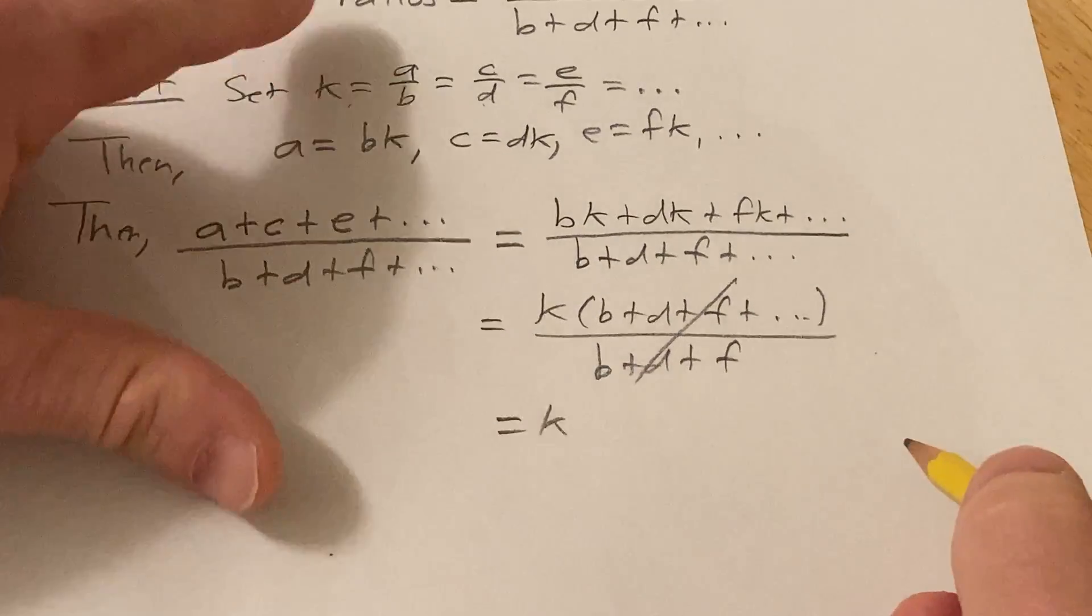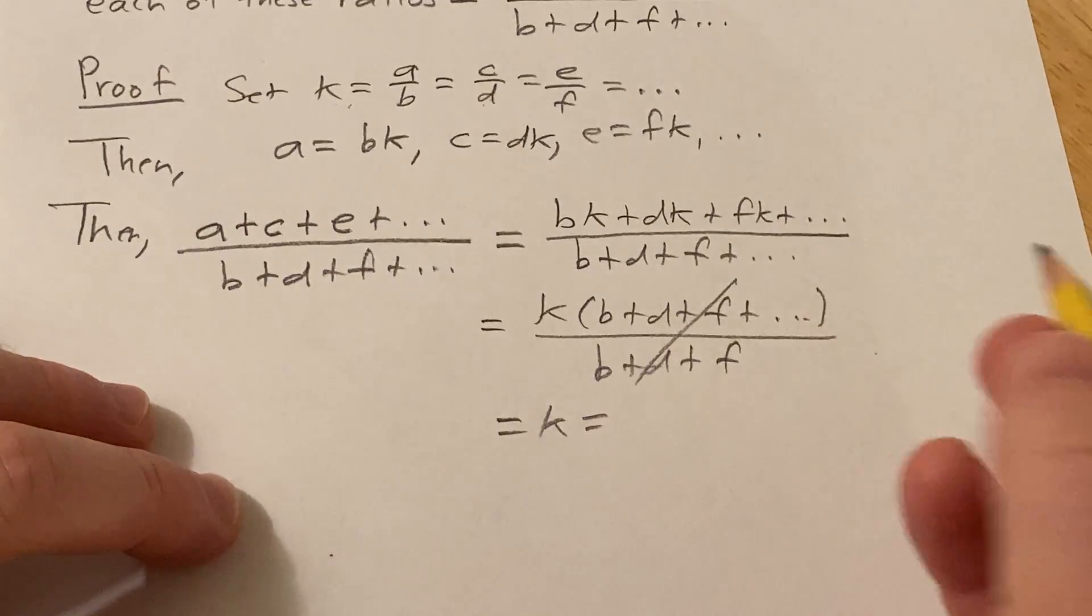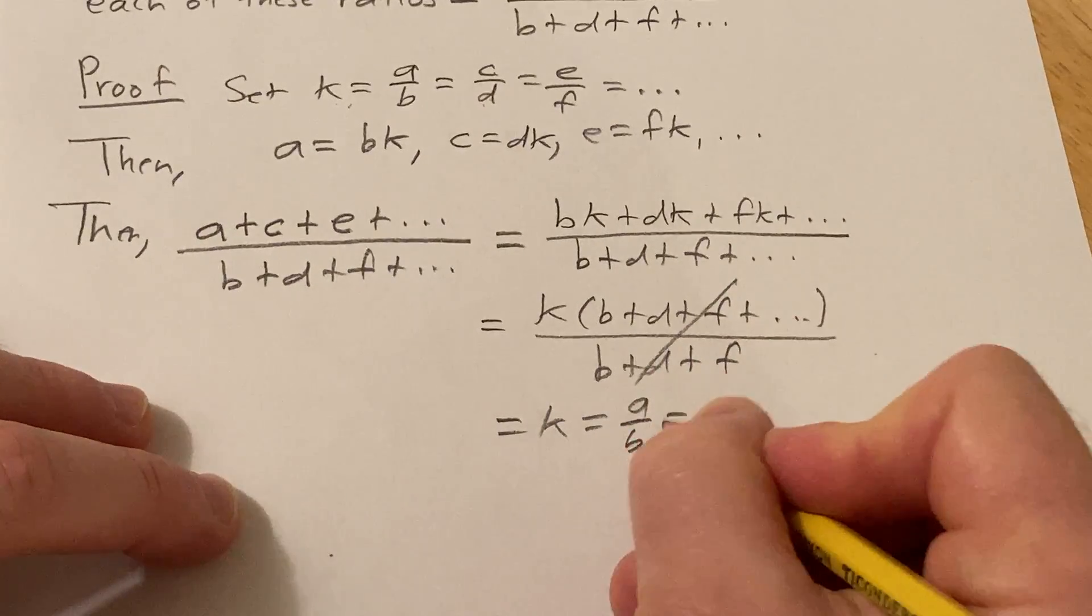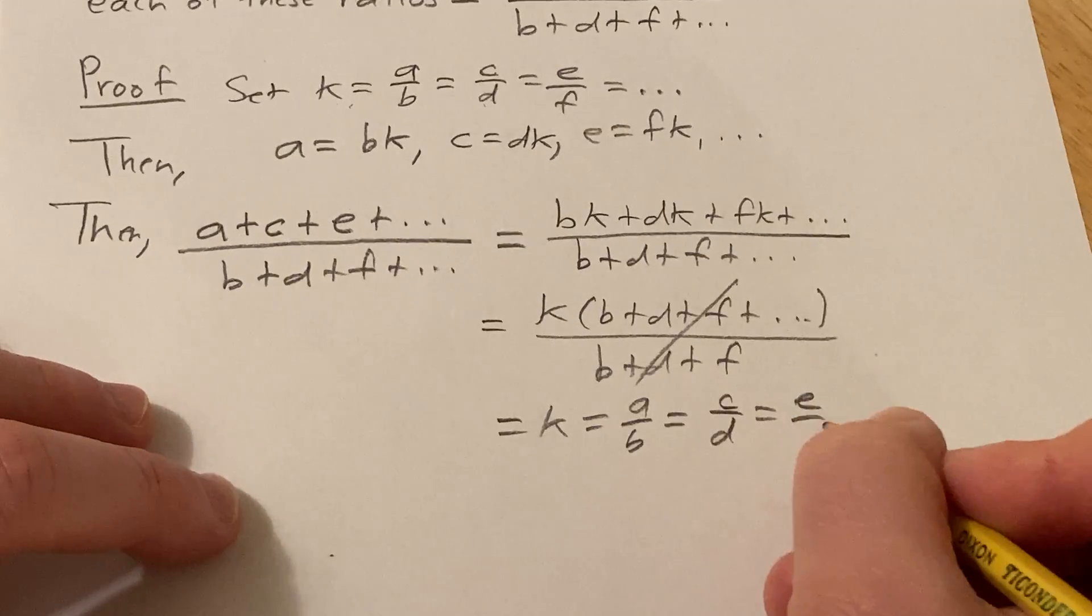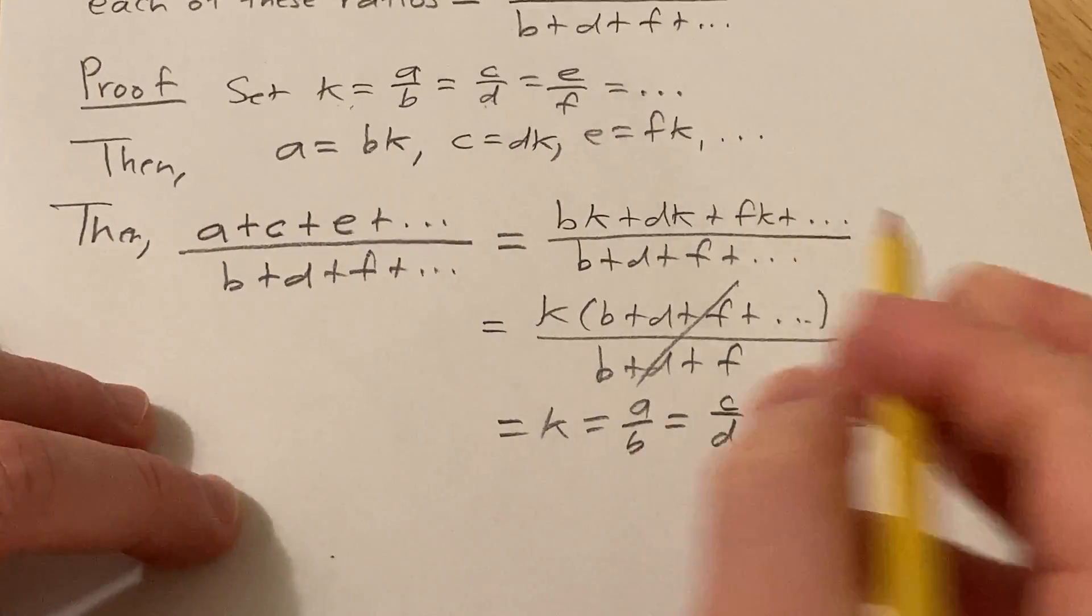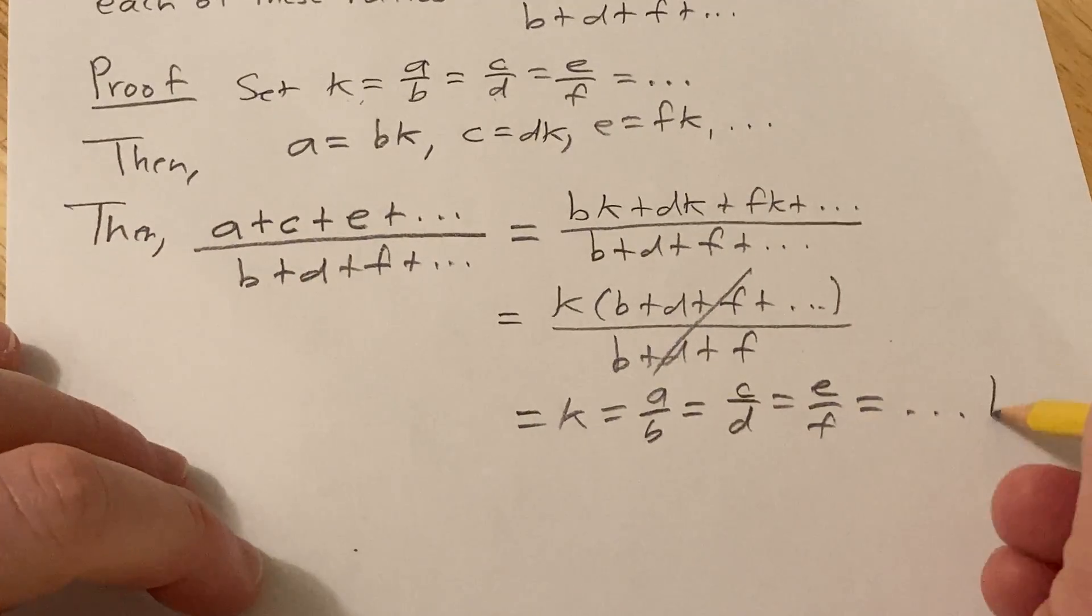But we know what k is. We said it was equal to each of these ratios or each of these fractions. So a over b equals c over d equals e over f. And that's exactly what we wanted to prove. So that completes the proof.